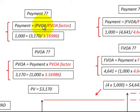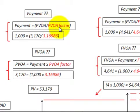If we don't know what the payments are, but we do know the present value of the ordinary annuity and the factor, we just divide those and we can determine our payments.